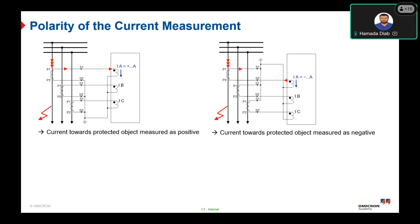An important aspect of the current transformer is its polarity. In the first example, the CT current is directed towards the protected object — S2 is grounded, meaning the CT start point is directed towards the protected object such as the overhead line or underground cable. In this case, the current is measured as positive (IA = +A). In the second example, S1 is grounded, meaning the CT start point is directed towards the busbar, and the current is measured as negative at the protection relay.